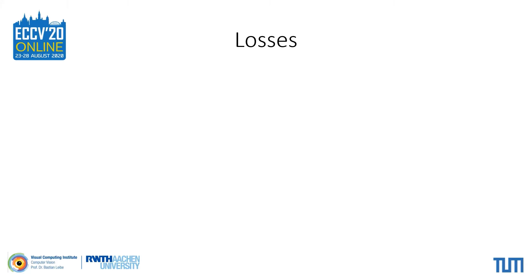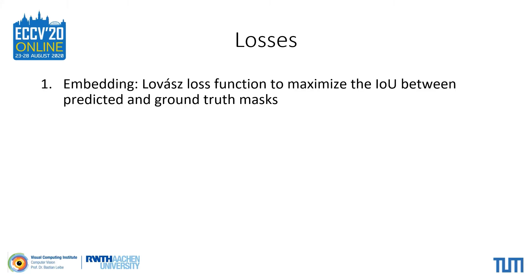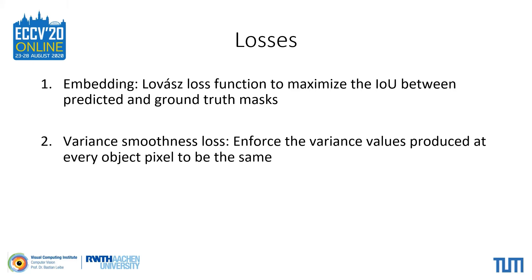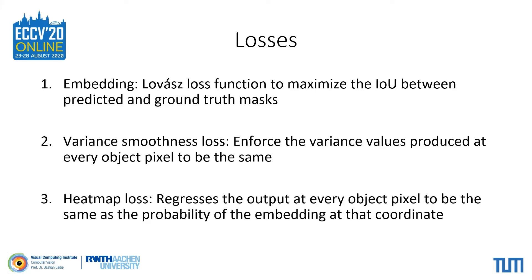Our training loss is a combination of three components. The first is an embedding loss which maximizes the IOU between predicted and ground truth object masks. The second is a variance smoothness loss which enforces that the variance values produced at all pixel locations belonging to a given object are the same. Finally, the third component is the object center heatmap loss, which regresses the output at every object pixel to be the same as the probability of the embedding at that coordinate.